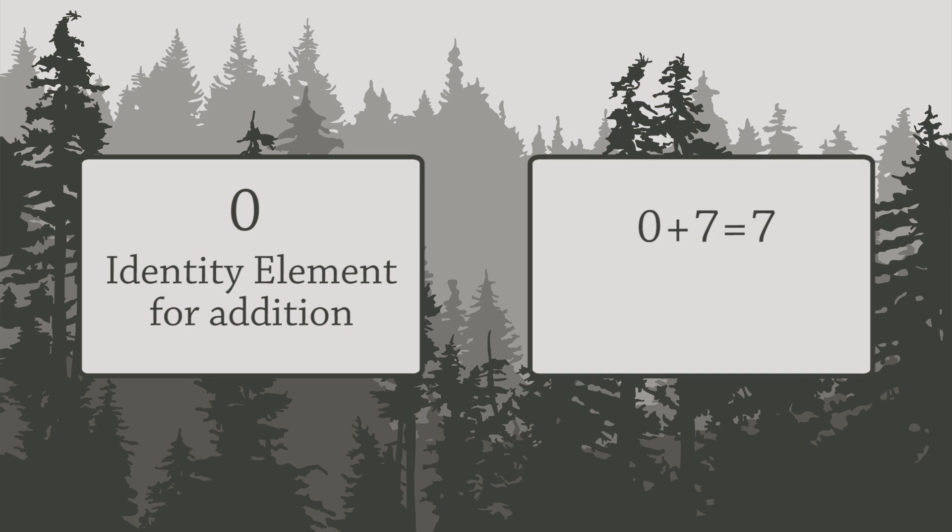For example, 0 plus 7 is 7, and negative 3 plus 0 equals negative 3. Adding 0 doesn't change the number.